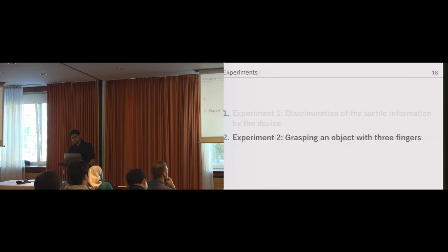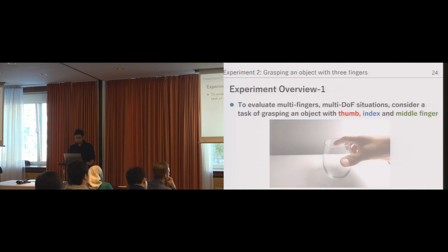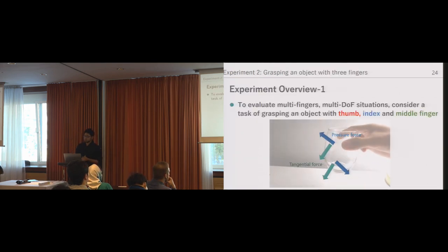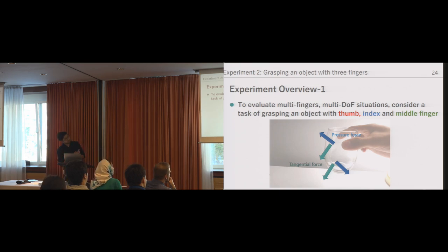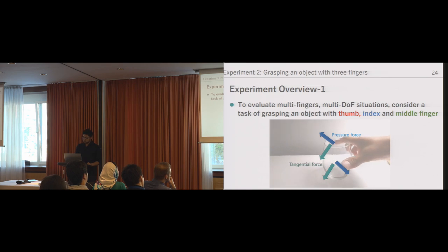The second experiment is to present the grasping force in a virtual reality environment. We considered the grasping and lifting an object as a task involving multiple fingers and multiple directions of force. When we grasp an object, the object exerts vertical pressure on the fingers and when lifting the grasped object, the force of gravity results in lateral skin deformation. Presenting these force information to the wrist, including the direction presented by the fingertip may lead to more realistic experience.